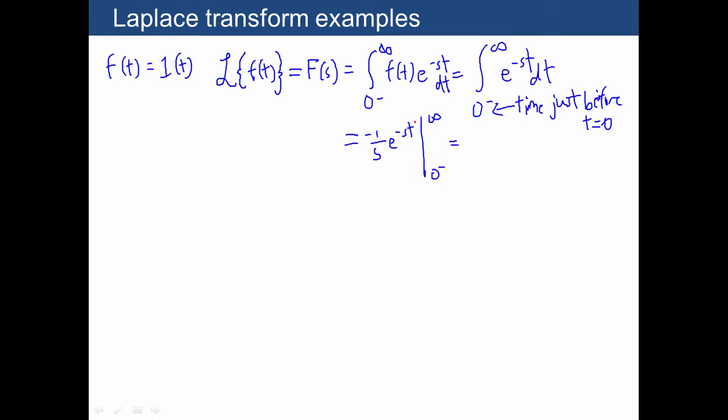Now when you plug in time infinity, that's just going to give you a 0 here. So this is going to be 0 minus negative 1 over s times e to the negative s times 0. In other words, this is just going to give us 1 over s. So the Laplace transform of the unit step function is 1 over s.